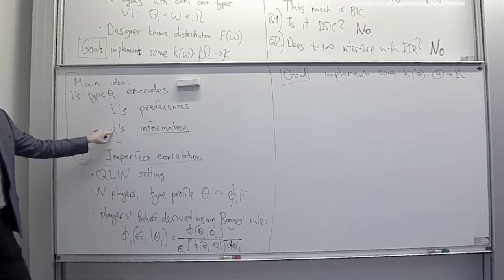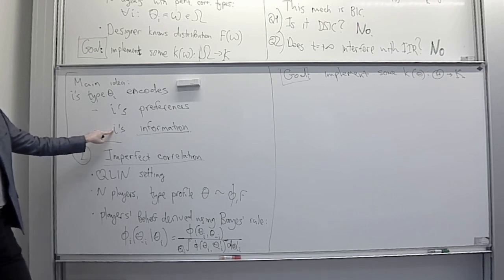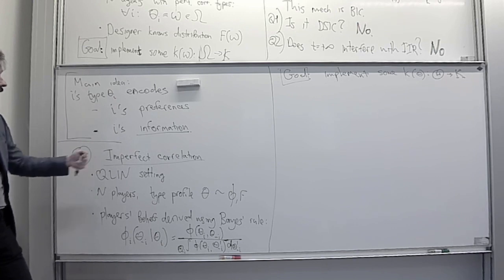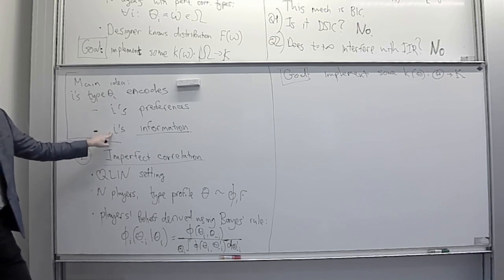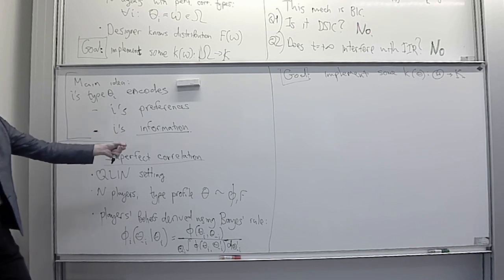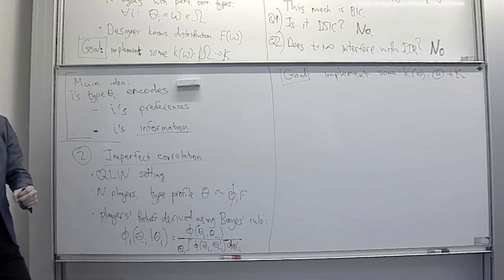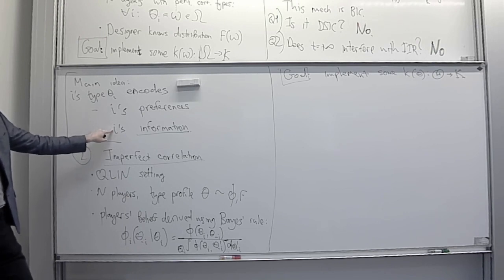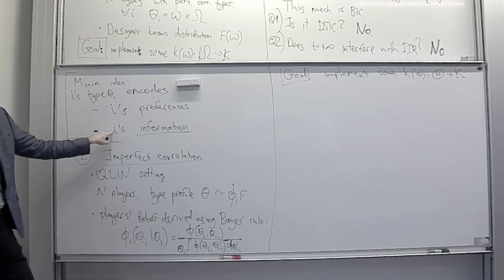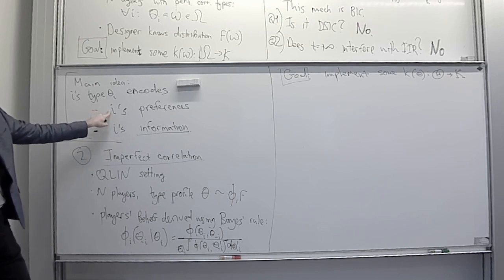Player i does not know for sure what other players' types are. But we can still follow the same path and ask player i to bet on other players' types, because player i knows the distribution of other players' types better than the designer. Player i has some private information about the distribution of other players' types, and we will focus on extracting this aspect of private information rather than extracting information about player i's preferences.